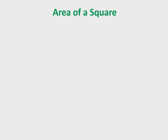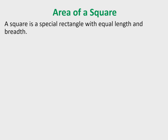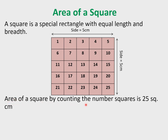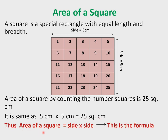Now let us find the shortcut or formula to find the area of a square. A square is a special rectangle with equal length and breadth. Here, length = 5 cm and breadth = 5 cm, so we say side = 5 cm. Area of the square by counting = 25 square cm, which is the same as 5 cm × 5 cm = 25 square cm. Thus, area of a square = side × side.